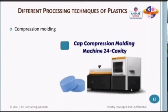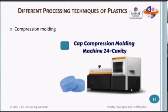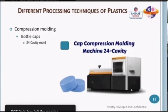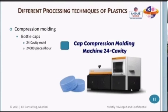Now let's look at compression molding. We're going to look at compression molding of caps — these caps are typically used for beverage containers like soda bottles or water bottles. I'm going to share a video where you can see a 24-cavity mold making 24,000 pieces in an hour, with no wastage or runner in this compression molding manufacturing process.